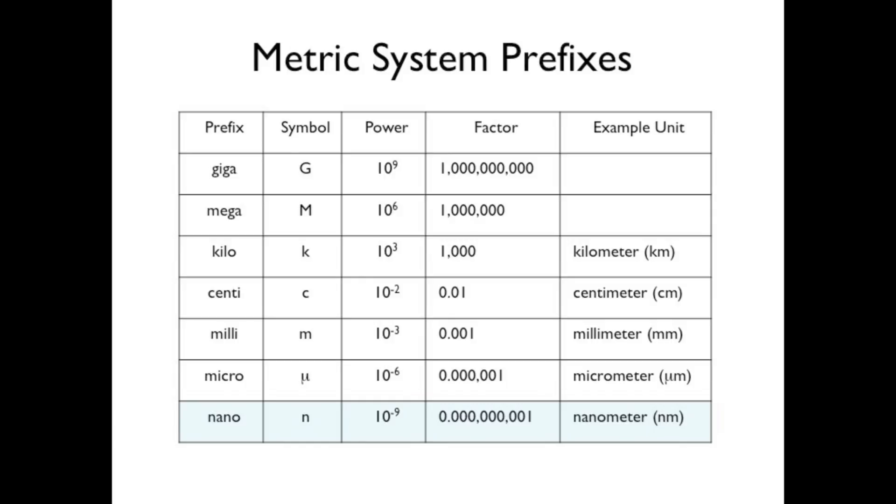Consider the nanometer, a good unit with which to measure the wavelength of light. One nanometer equals 10 to the minus 9 meters. So a wavelength of one nanometer equals one billionth of a meter, a very small length indeed.